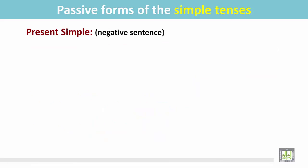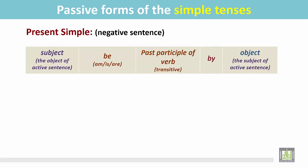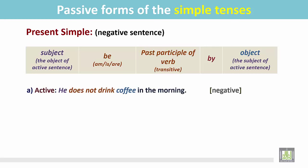Present simple negative sentence: the same structure is followed to change the active sentence into passive. Example: 'He does not drink coffee in the morning.' It is a negative sentence. Here we see the subject; this is the transitive verb. If we ask 'he does not drink — what?' we find the answer: 'coffee,' and it is the object of the verb 'drink.'